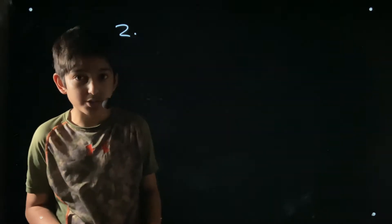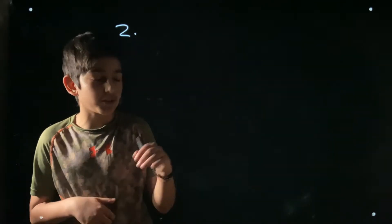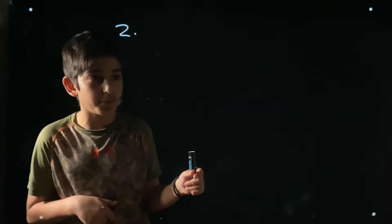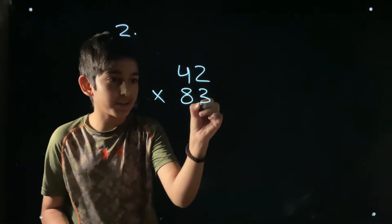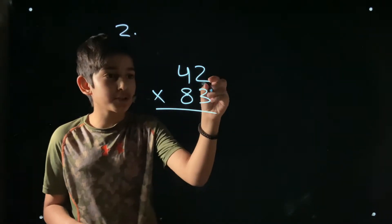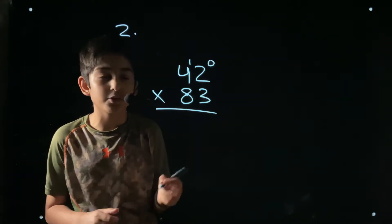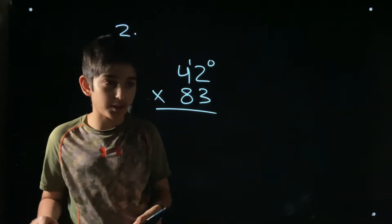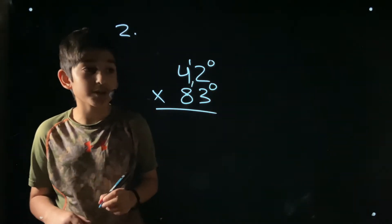The second multiplication trick has no restrictions — you can multiply any two-digit numbers. You just have to number the positions across the top of the numbers. The units position is always zero, the tens position is one, the hundreds position is two, and it keeps going like that.